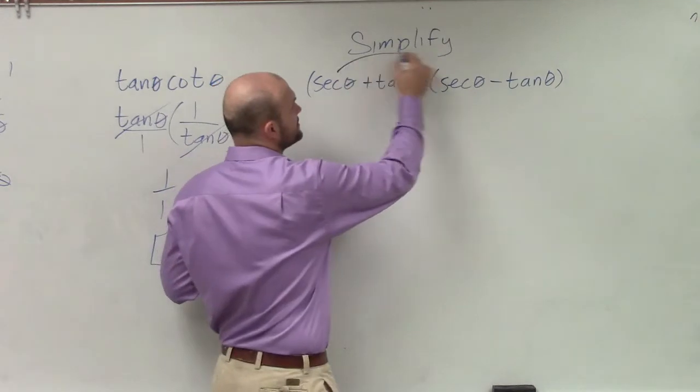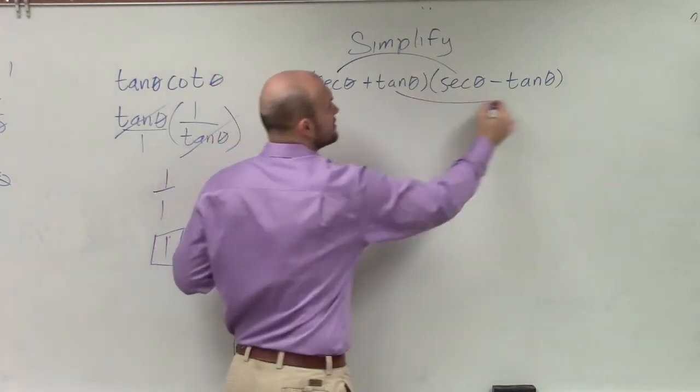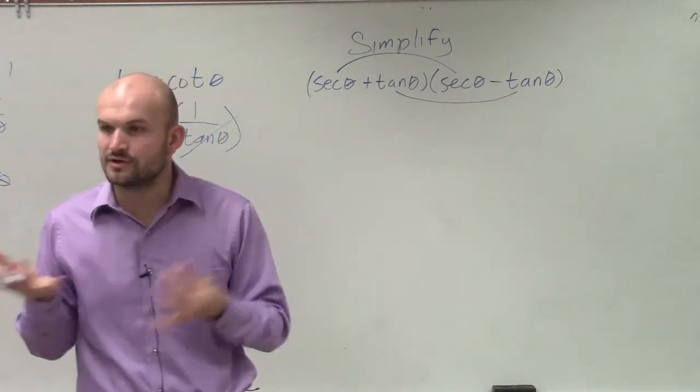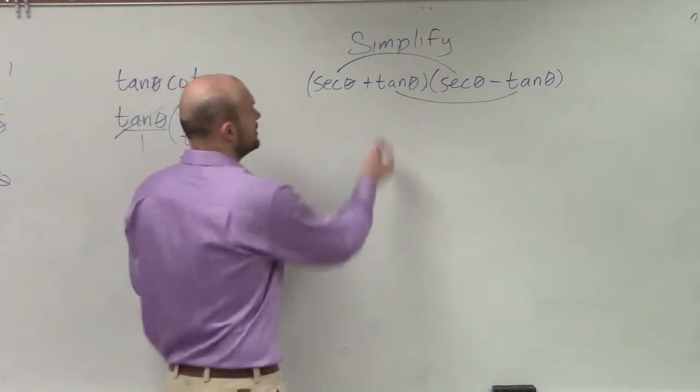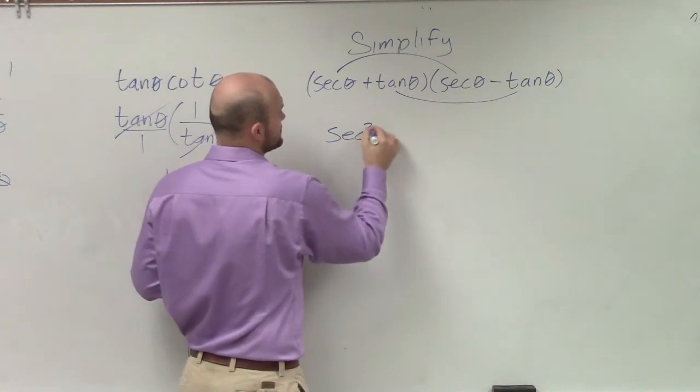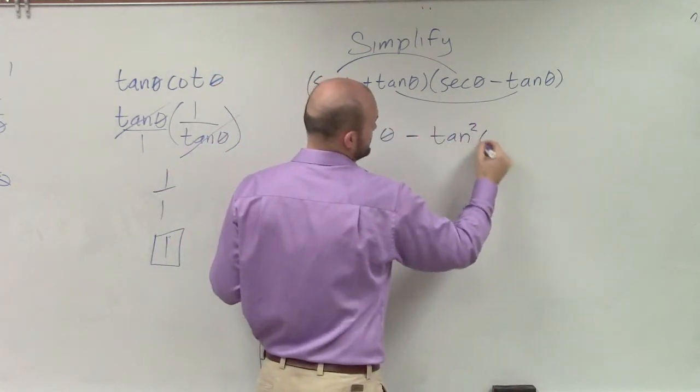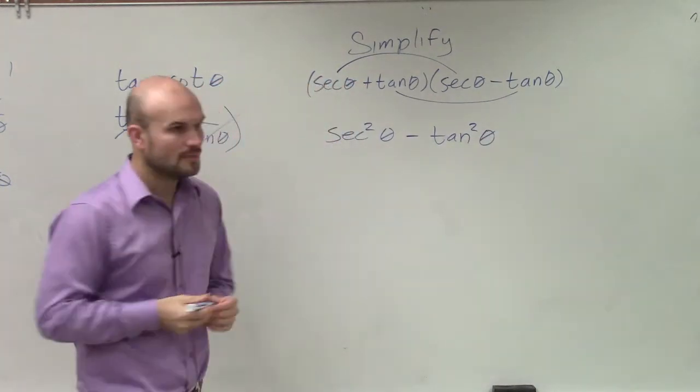Meaning all I have to do is multiply my first two terms and multiply the last two terms, right? Because if you multiply the inner and the outers, you know they're going to add to zero. So I'm multiplying these. I have secant squared of theta minus tan squared of theta.